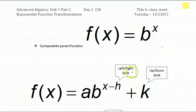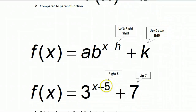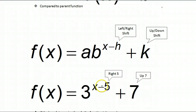In a nutshell, we learned that anything being added or subtracted in the exponent will be a left-right shift. Anything that's being added or subtracted on the end is an up or down shift. These left-right shifts work sort of the opposite of what you would think — so if it's a number being subtracted, that's actually a shift to the right. And if something is being added, then it would be to the left. The number on the end works just like you would think, so plus seven will move the graph up seven.